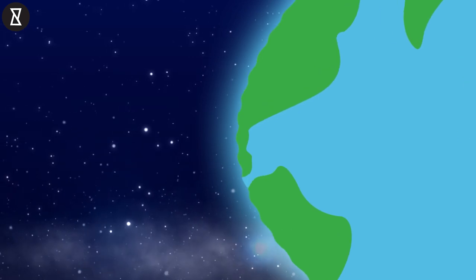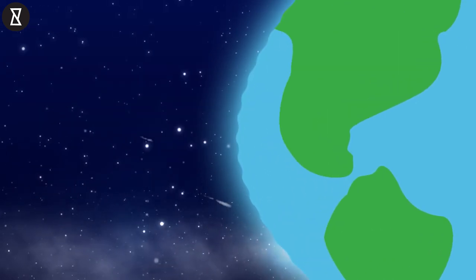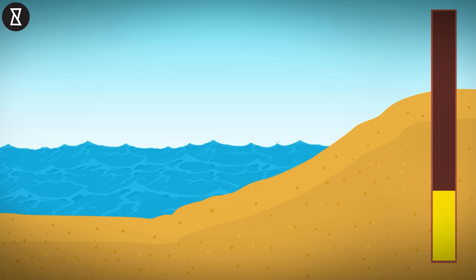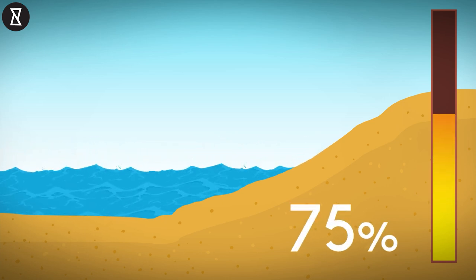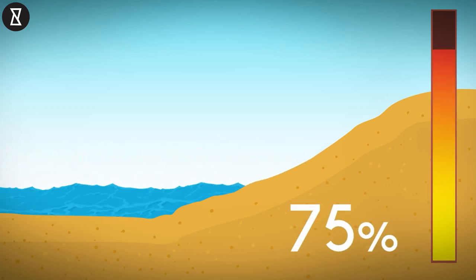The moon also majorly influences the earth's tides. Without the moon, the rise and fall of tides would be smaller by 75 percent and that would definitely affect the weather significantly.